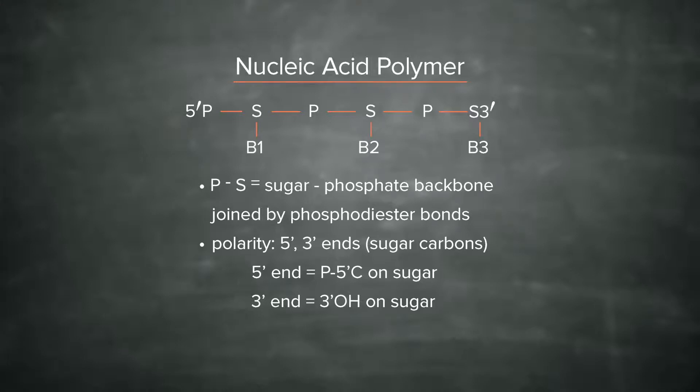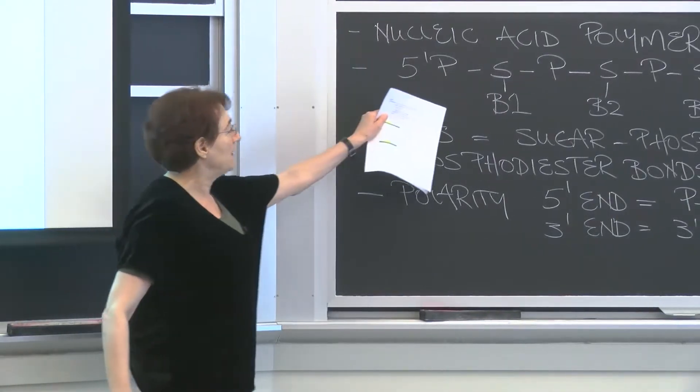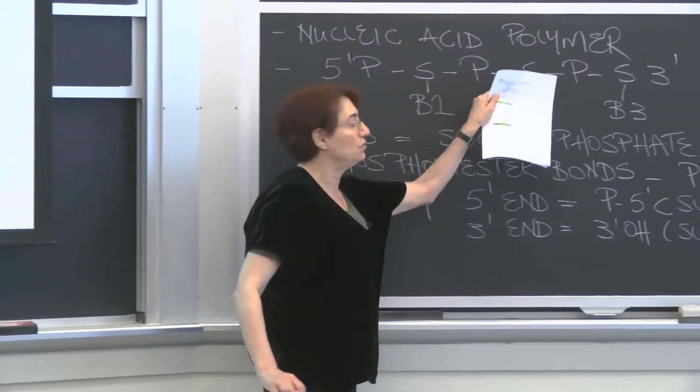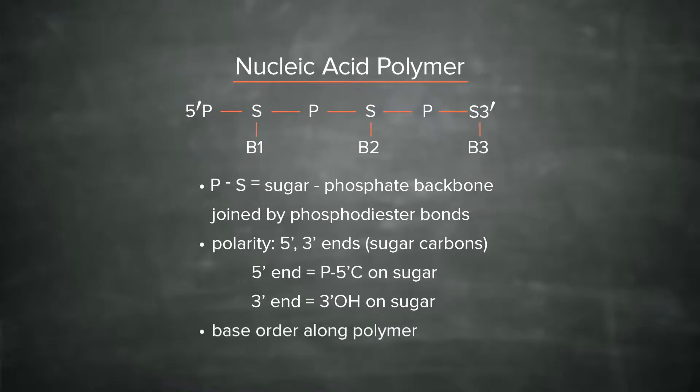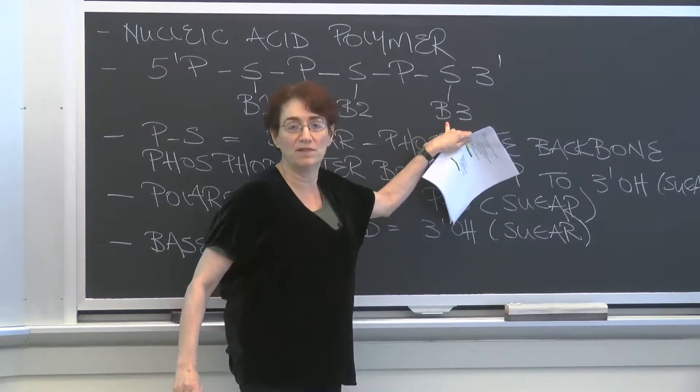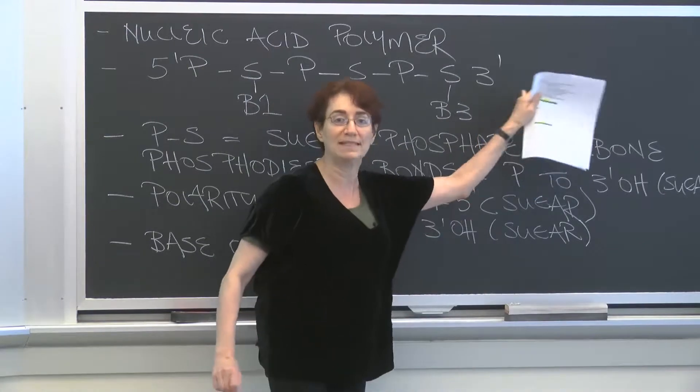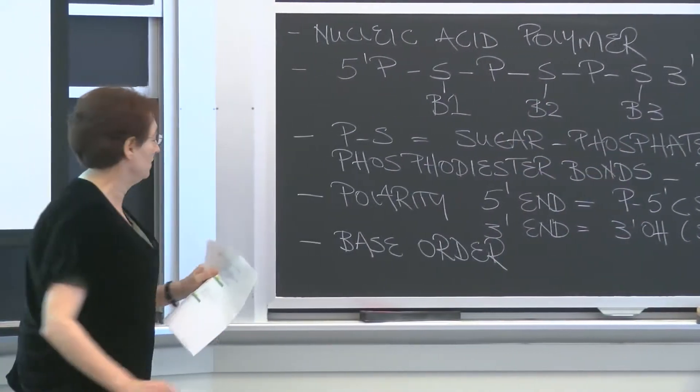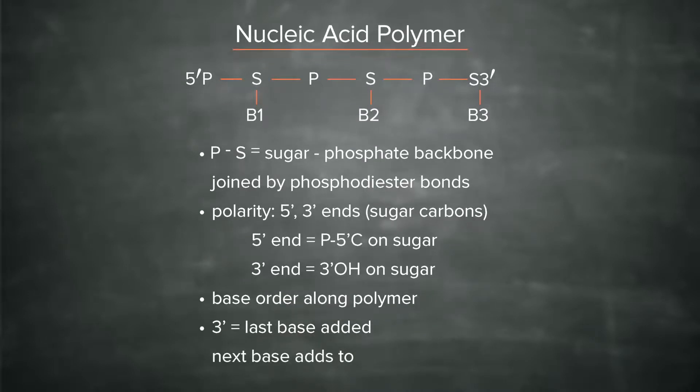The second thing that you need to know is that this polarity is superimposed with the bases and the sequence of the bases along the polymer. So base one is near to this 5' end, then base two and base three. So there is base order along the polymer. And then the last thing that you should know is that a new base will add on to this 3' end. So this base three was the last one that was added to the polymer. And when a new one comes along to extend the polymer, it will add to that 3' end. So the 3' is the last base added. And the next base adds to the 3' hydroxyl group on the sugar.